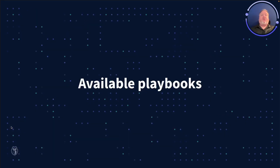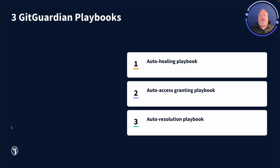GitGuardian offers three different playbooks at this time: an auto-healing playbook, an auto-access granting playbook, and an auto-resolution playbook.